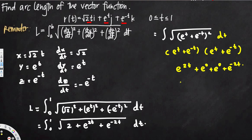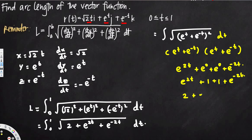Simplifying: e^(2t) plus e^0 which is 1, plus e^0 which is 1, plus e^(−2t). That gives us 2 + e^(2t) + e^(−2t), which is exactly the same expression we had inside the square root. So the factoring is confirmed correct.